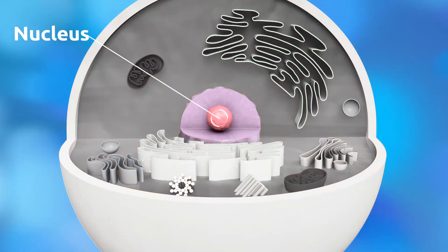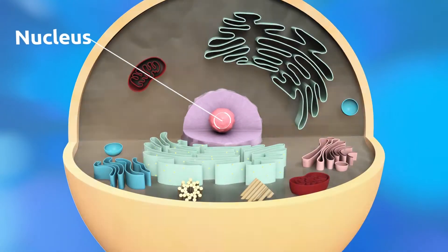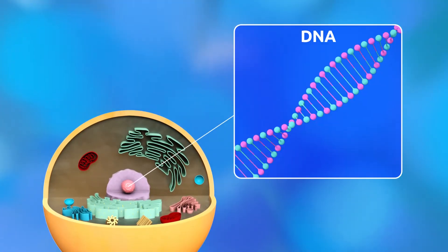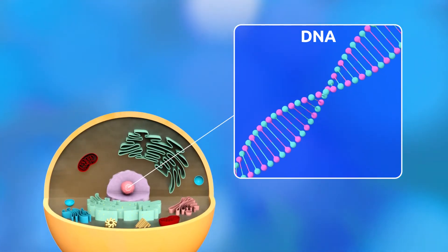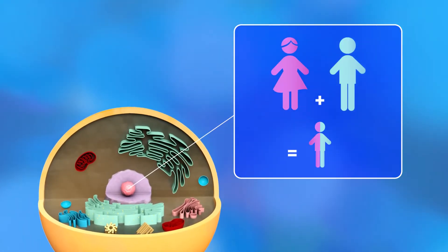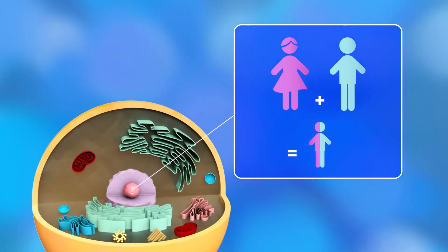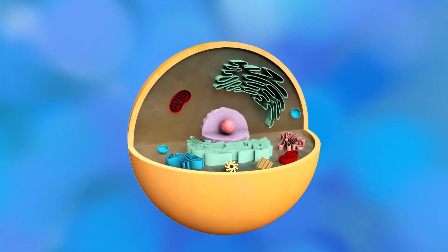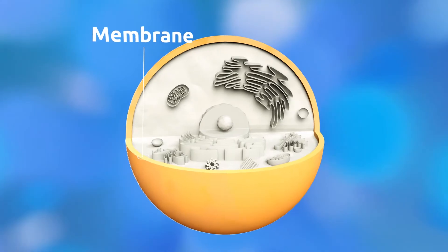In an animal cell, the nucleus is in charge of all cell functions. DNA is stored in the nucleus and is made up of genes which hold genetic information. When animals reproduce, the genetic material passes on to their young, which is why baby animals share the same characteristics.